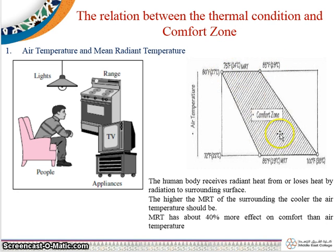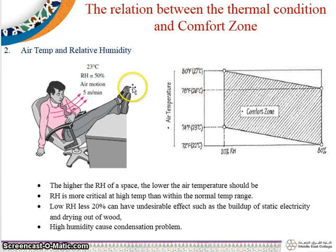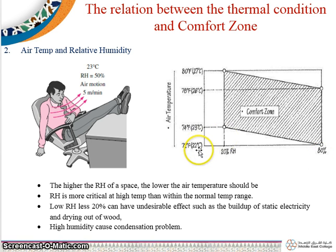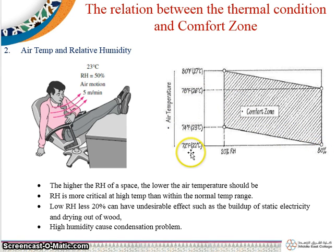This is the comfort zone in relation to mean radiant temperature and air temperature. For air temperature and relative humidity: when relative humidity is 80%, the comfort temperature range is 22 to 26 degrees centigrade. When relative humidity is 20%, humans feel comfort between 23 to 27 degrees centigrade. This is the comfort zone in relation to air temperature and relative humidity.